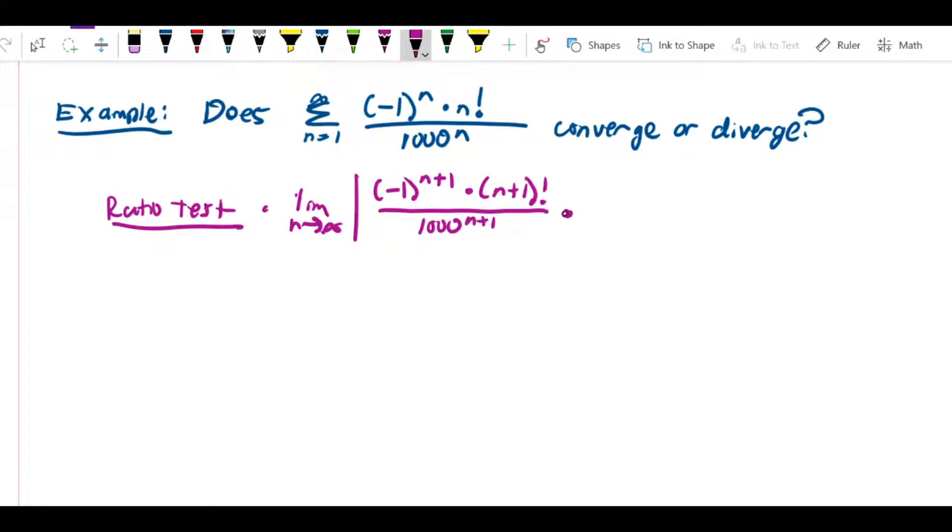And then, as I said before, I'm just going to multiply by the reciprocal of a_n, so that's going to be 1000 to the n over negative 1 to the n times n factorial.